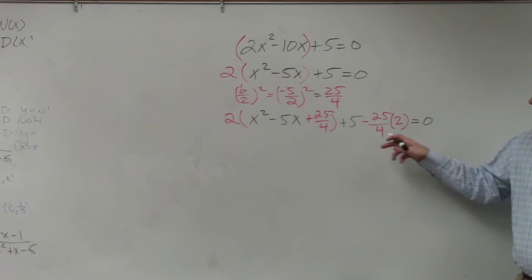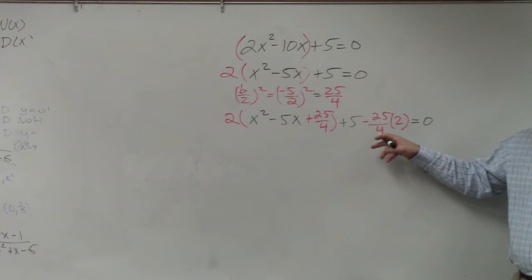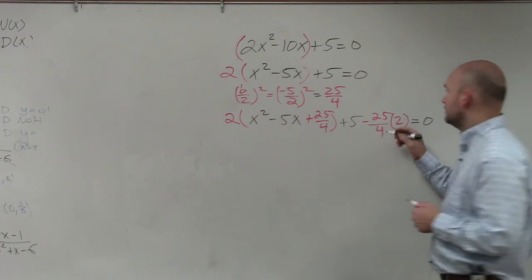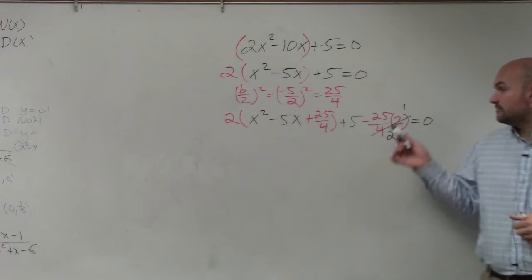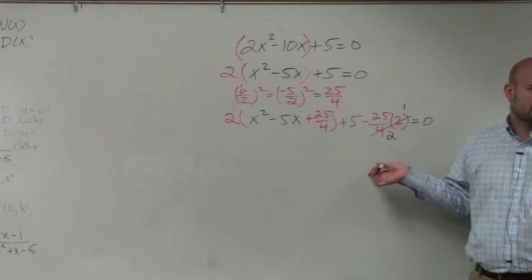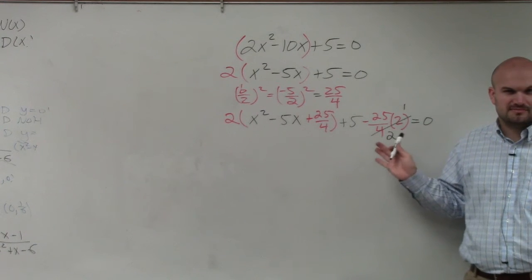OK. Now, one thing we can notice, 2 divided by 4 reduces to what? 1 half. So I can reduce that to 1 over 2. Does everybody agree with me? Just simplifying things makes it easier.